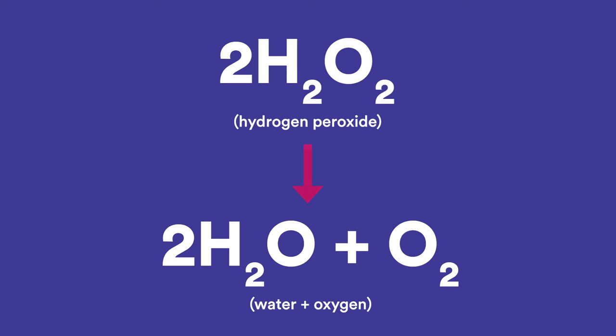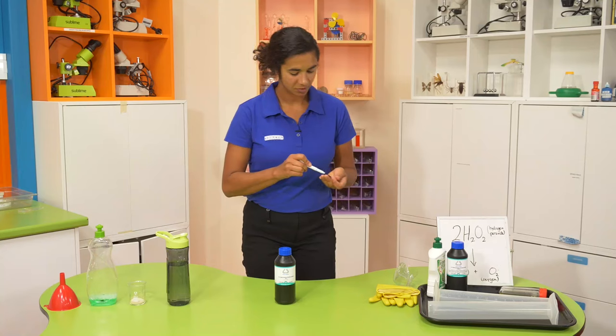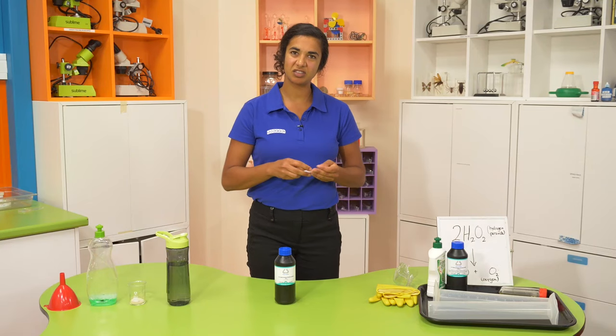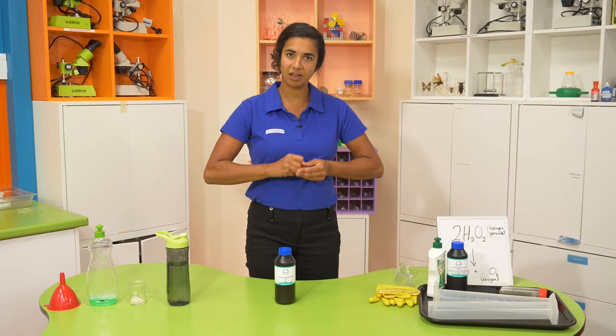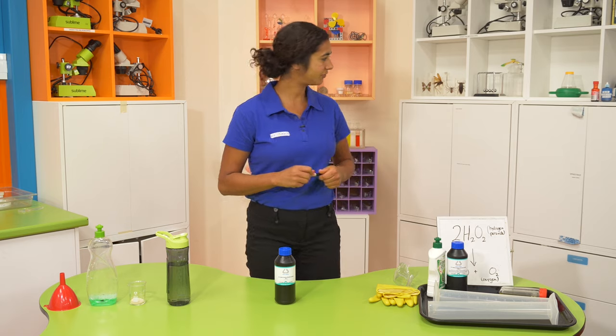This is what the decomposition of hydrogen peroxide looks like: H2O2 breaks down to water, H2O, and oxygen. What does this reaction look like in real life? Let's find out.